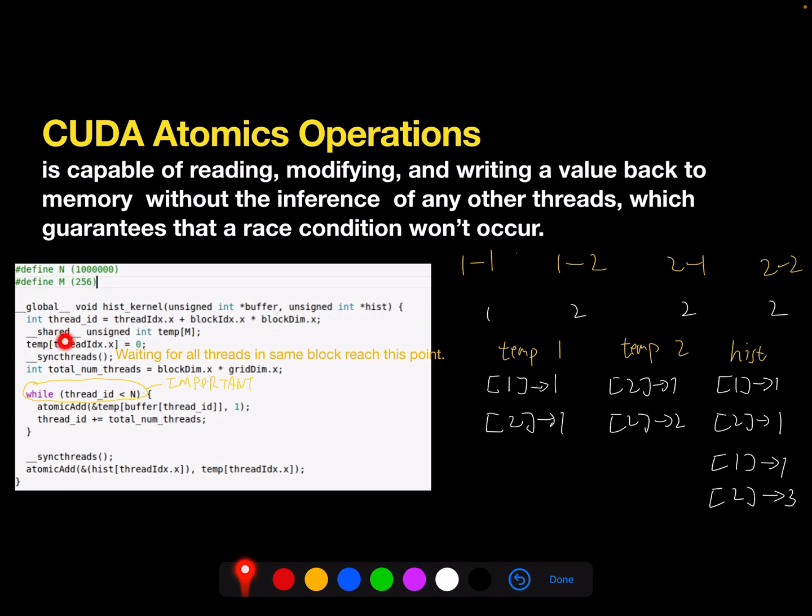Then I define a shell memory for all the blocks, all the threads of the block. One trick I use here is I know the histogram length is m. Then I define all the kernel numbers in a block as m size as well.